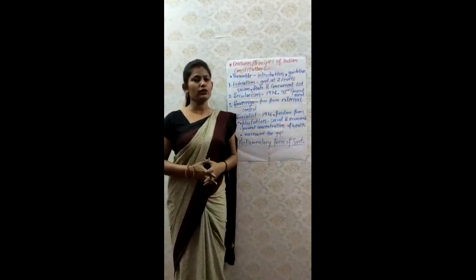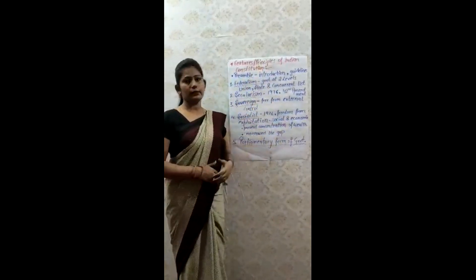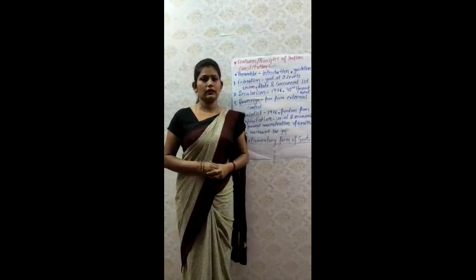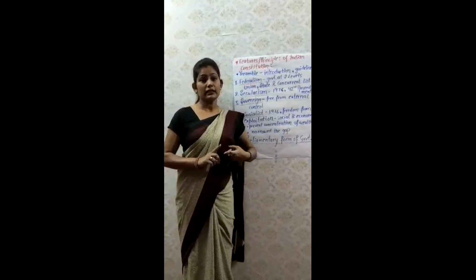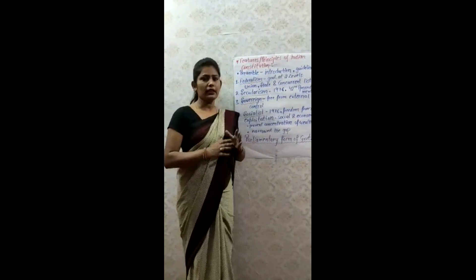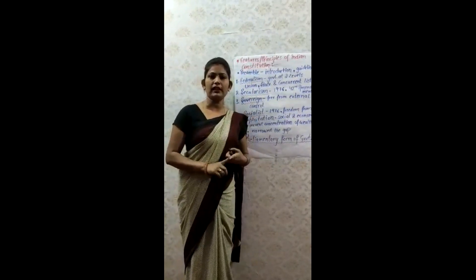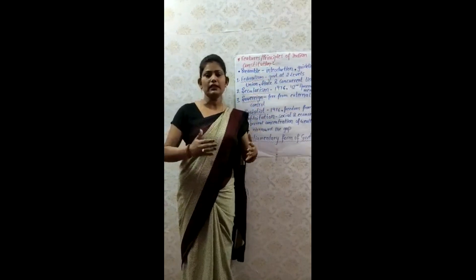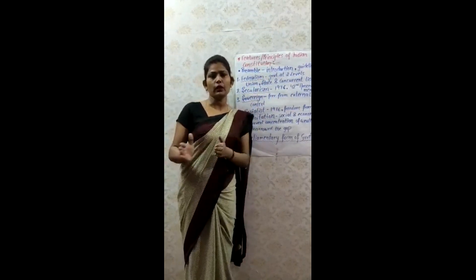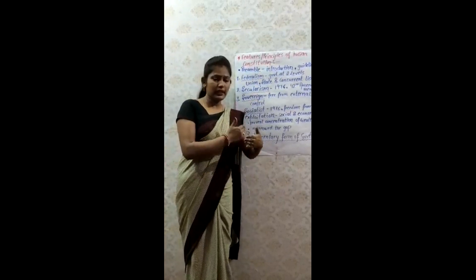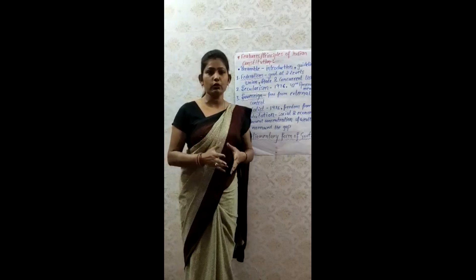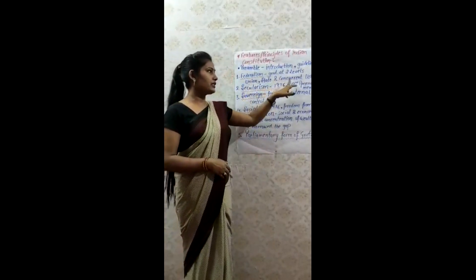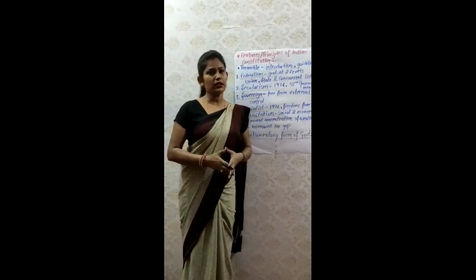Let us start with the principles of our Constitution. The first principle is Federalism. Federalism means government at two levels — one at the state level and one at the central level. In federalism, there are three types of lists according to which subjects are divided: the Union List, the State List, and the Concurrent List.